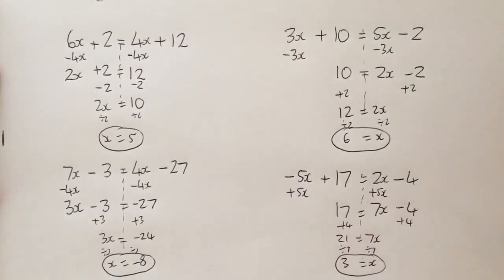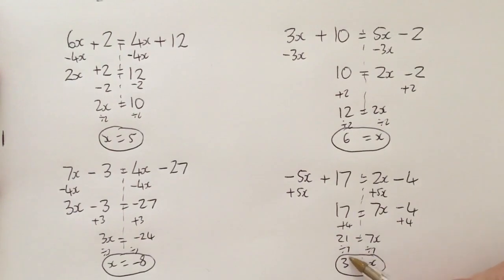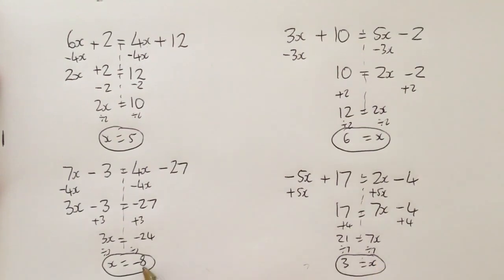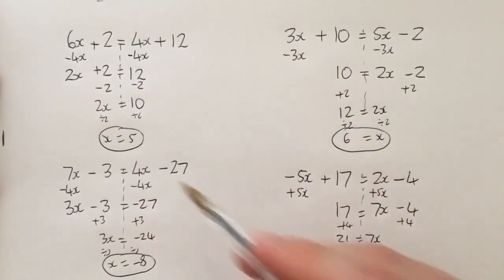Just quickly watch out, guys, for questions where maybe it doesn't go in nicely to a whole number. If for example that was 23 divided by 7, I would leave my answer as 23 over 7. The only reason why all of these aren't written like that is because they all end up being nice whole numbers. Hopefully this video has helped.